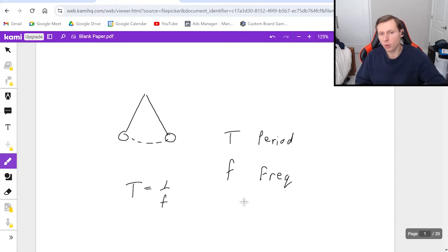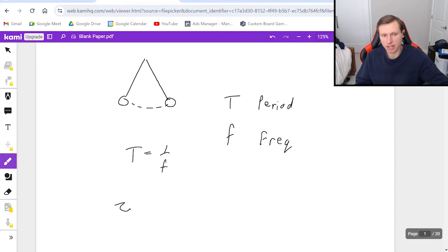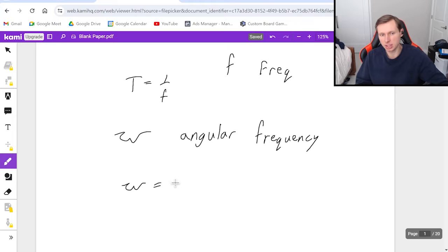And then the last quantity we have is omega, which is going to be our angular frequency. And we know the equation for that is omega is equal to two pi F, or you can write it as two pi divided by T, period. So now that we're familiar with those three terms, now let's see how they relate to the pendulum.